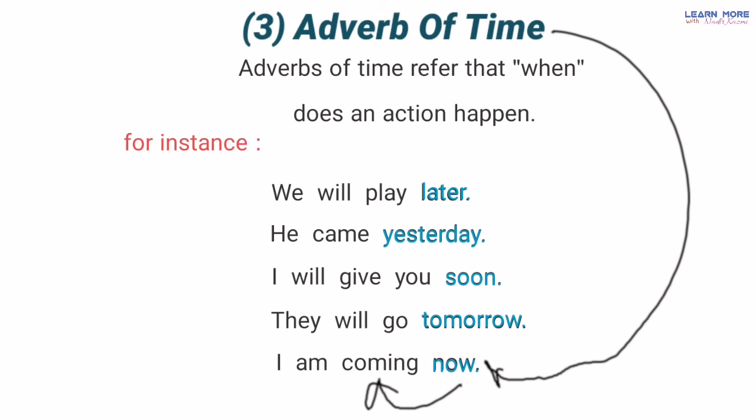Toh yeh hamare adverb of time the jo verb ke time ke baare mein batate hain — yani jo action ho raha hai, hota hai, woh kab hota hai, kis time mein hota hai — toh yeh hamare adverb of time kehlate hain. And now we'll turn to adverb of degree.